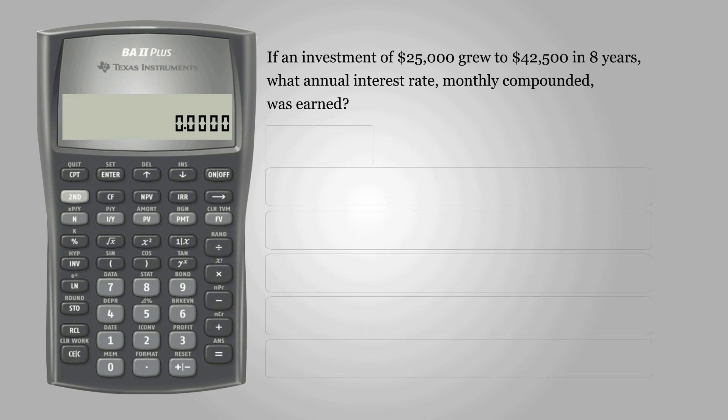First we need to set all variables to defaults, so press 2nd and FV to clear TVM or time value of money.